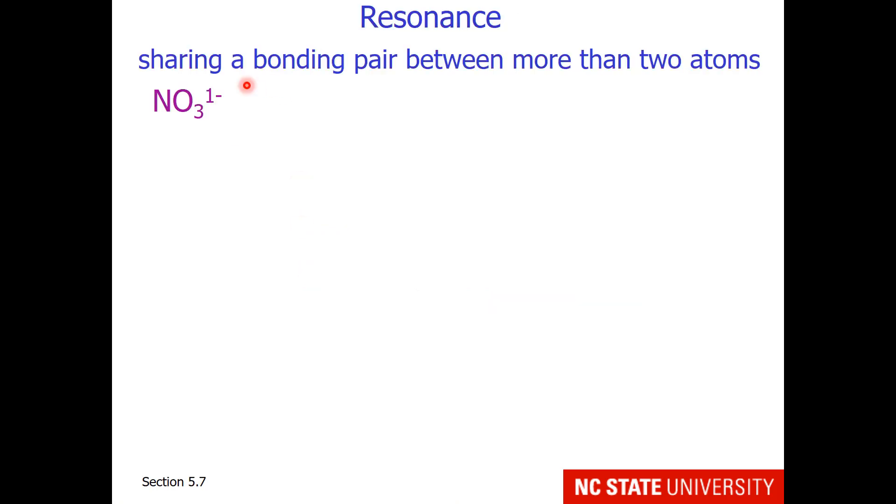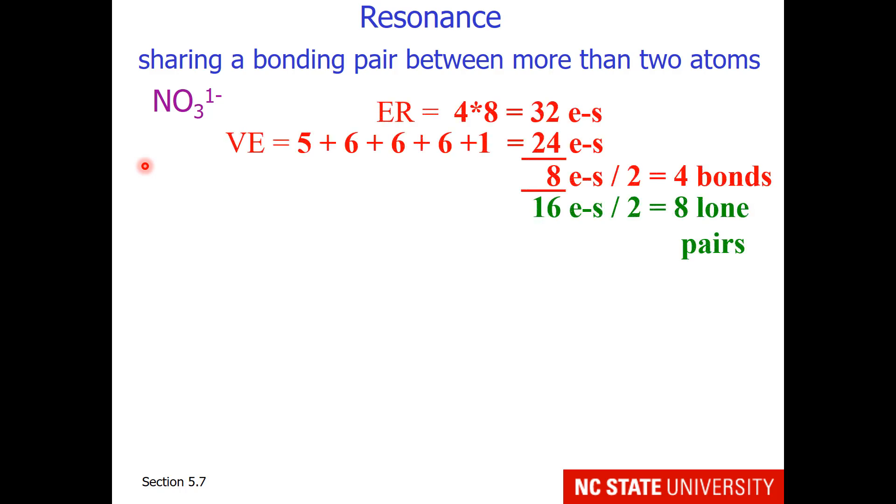Here is another example of resonance. This time we're going to share the bonding pair between four atoms. So this is the nitrate ion, and in a large class, if I asked students to draw the structure, you'd go through the math and realize that you needed four bonds. Some of the students would draw this with the double bond up.